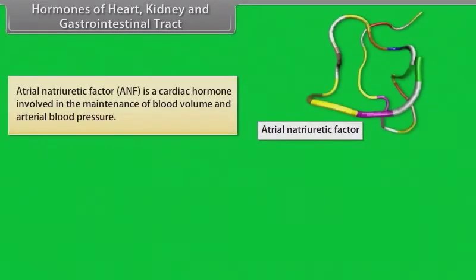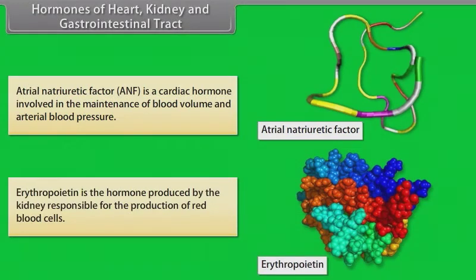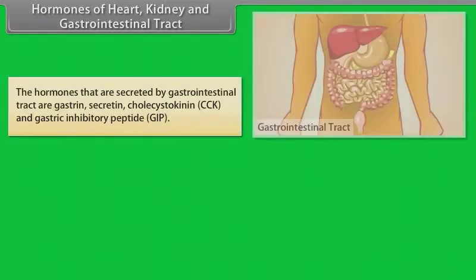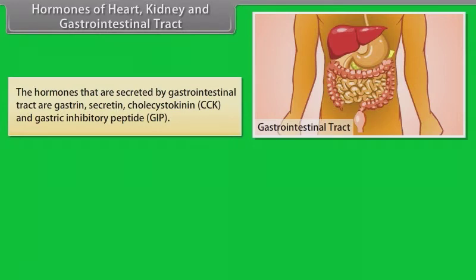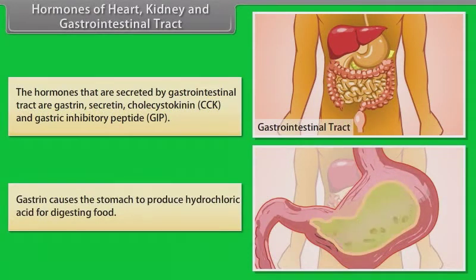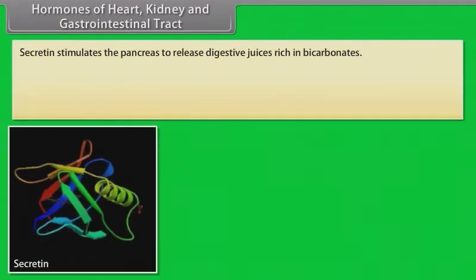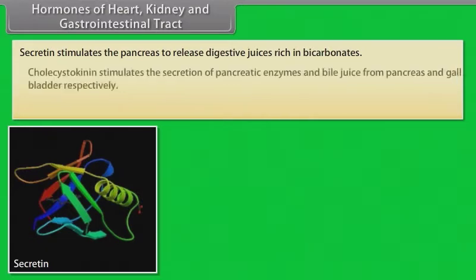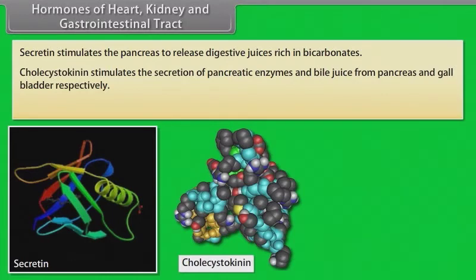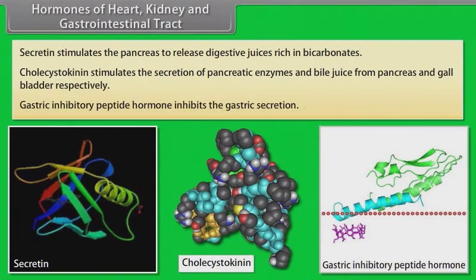Atrial natriuretic factor (ANF) is a cardiac hormone involved in the maintenance of blood volume and arterial blood pressure. Erythropoietin is the hormone produced by the kidney responsible for the production of red blood cells. Hormones secreted by the gastrointestinal tract are: gastrin, secretin, cholecystokinin (CCK), and gastric inhibitory peptide (GIP). Gastrin causes the stomach to produce hydrochloric acid for digesting food. Secretin stimulates the pancreas to release digestive juices rich in bicarbonates. Cholecystokinin stimulates the secretion of pancreatic enzymes and bile juice from the pancreas and gallbladder respectively. Gastric inhibitory peptide inhibits gastric secretion.